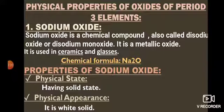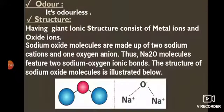The chemical formula of sodium oxide is Na2O. Its physical state is solid, white in color, and odorless. Its structure is a giant ionic structure consisting of metal ions and oxide ions. The molecule is made up of two sodium cations and one oxygen anion, giving two sodium-oxygen ionic bonds. The force of attraction: sodium atoms lose one electron each, providing two electrons to oxygen to complete its octet. The resulting electrostatic forces of attraction give sodium oxide an octahedral geometry.